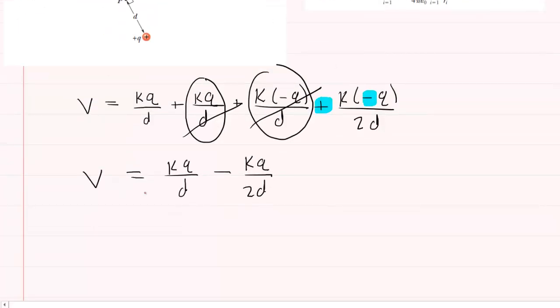And to simplify it further we can find a common denominator. So you can multiply this denominator by 2 as well as the numerator. So now we have the total potential equals 2kq over 2d minus 1kq over 2d. And in fact we can now subtract the numerators. 2kq minus 1kq is 1kq. And this will be over 2d.